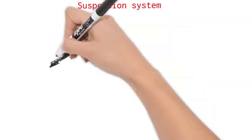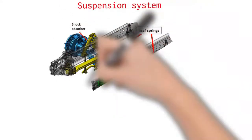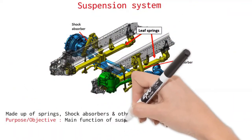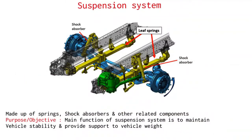Suspension system. Made up of springs, shock absorbers and other related components. Main function of suspension system is to maintain the vehicle stability and provide the support to vehicle weight.